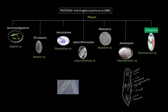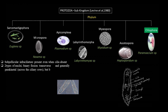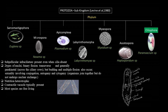The last phylum is Ciliophora: subpellicular infraciliature present, even when cilia are absent. Two types of nuclei. Generally, reproduction by binary fission, but budding and multiple fission also occur. Sexuality involves conjugation, autogamy, and cytogamy — in cytogamy organisms join together but do not undergo nuclear exchange. In some cases they prefer genetic exchange. Nutrition is always heterotrophic; contractile vacuole typically present. Most species are free living. That's all about protozoans.